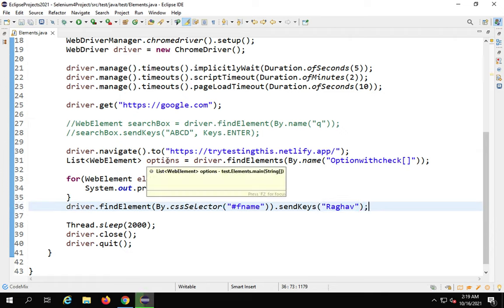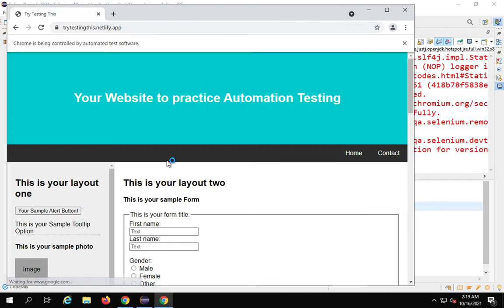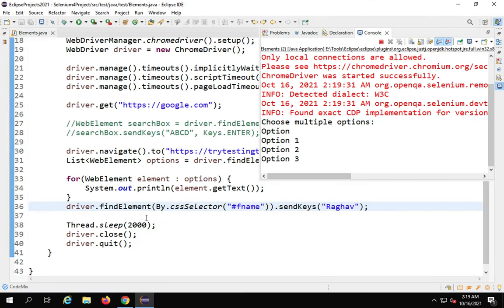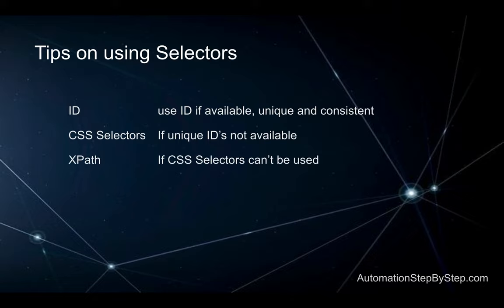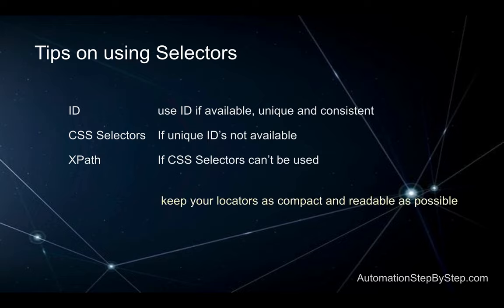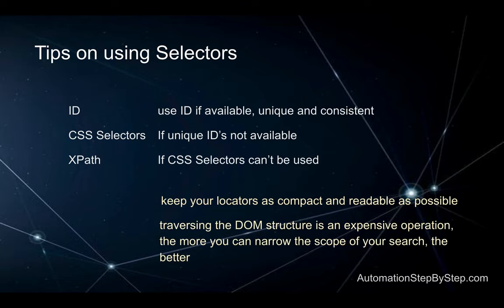Running the CSS selector example — it opens the browser, goes to the application, and has written 'Raghav' in the field, then closed the browser. This is how we use CSS selectors. If ID is not available, CSS is the next best selector. After that, use XPath to find elements. As a tip: always keep your locators compact and readable so when you look back at your code you know exactly what you used. Traversing the DOM with any locator strategy is an expensive operation, so use proper selectors to avoid performance issues.